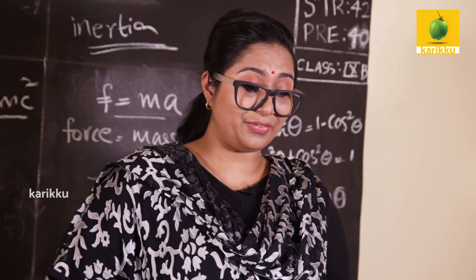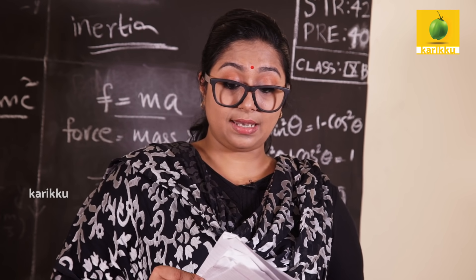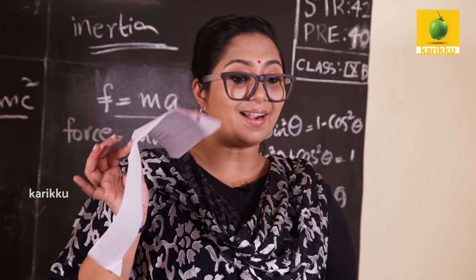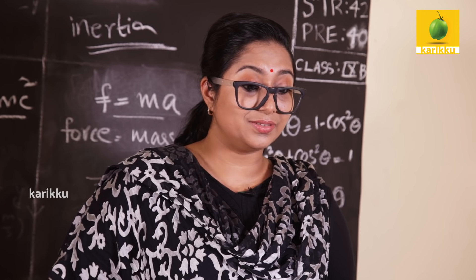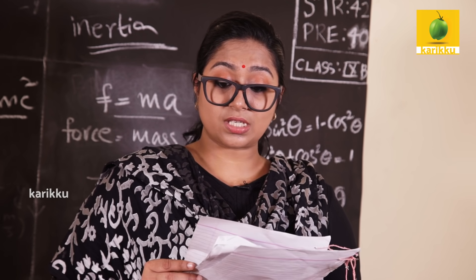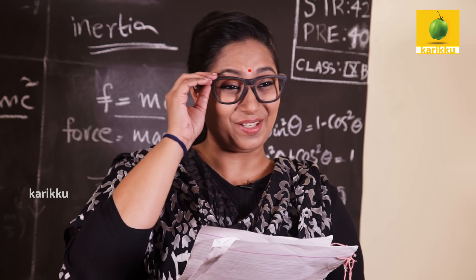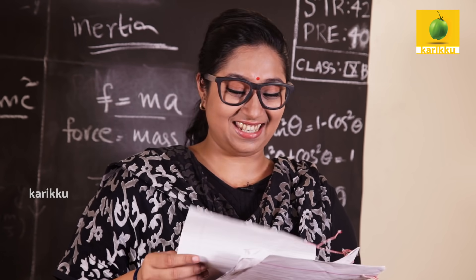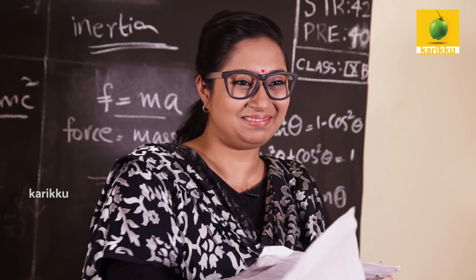2 out of 50. Sharlini, how many? 0 out of 50. Sumesh — improvement — 18 and a half out of 50. Just pass.